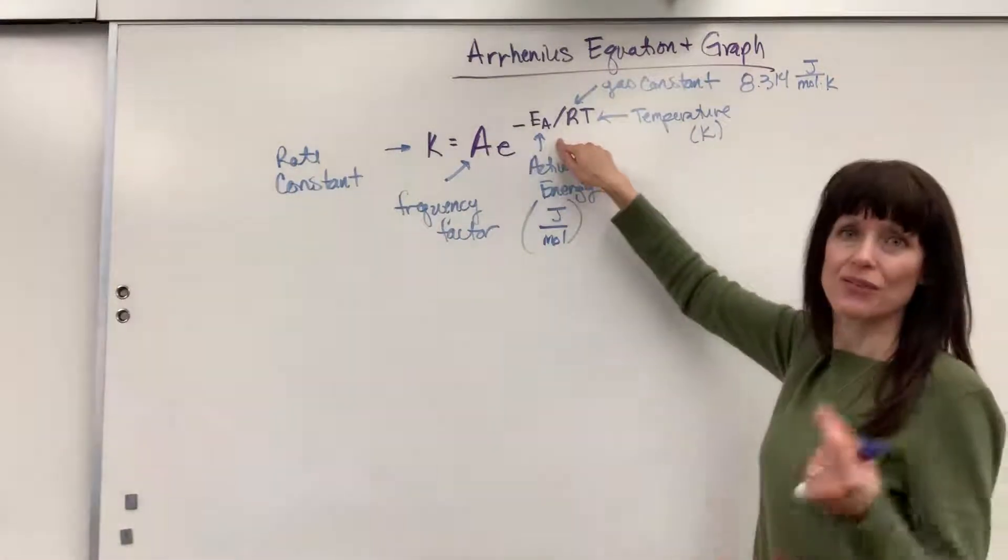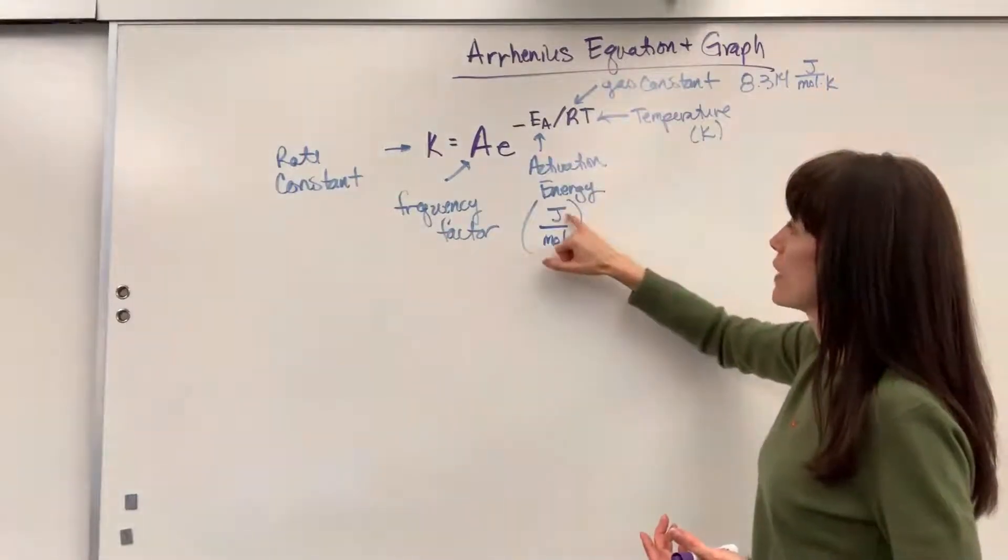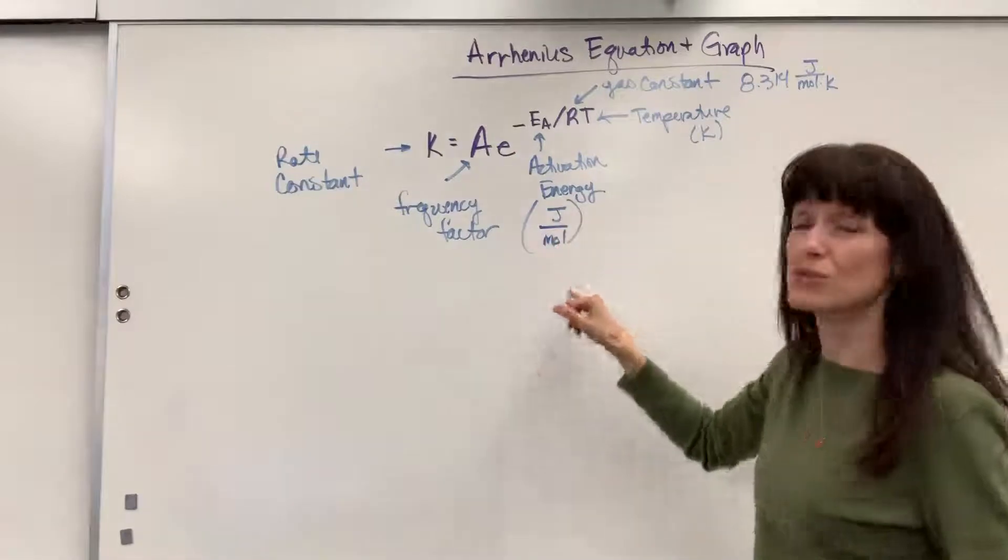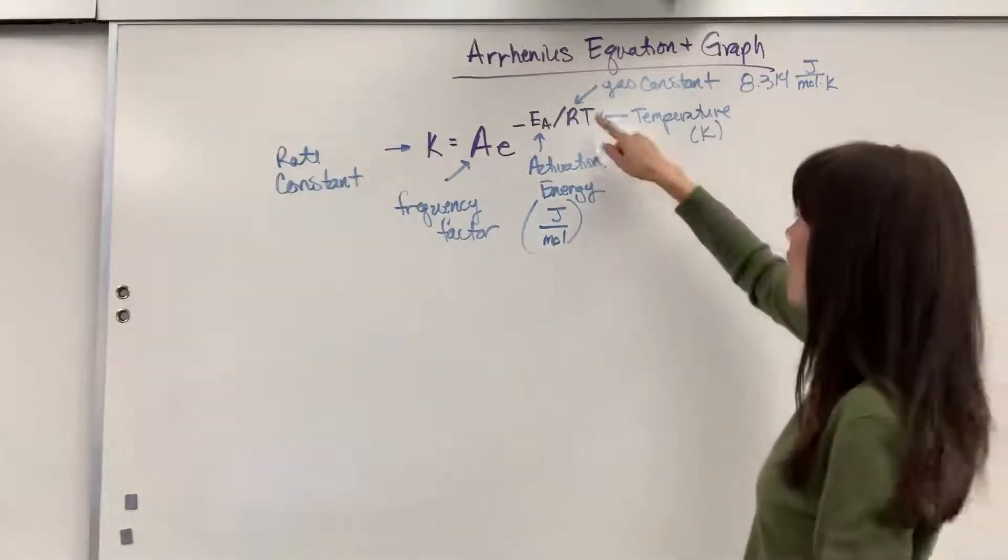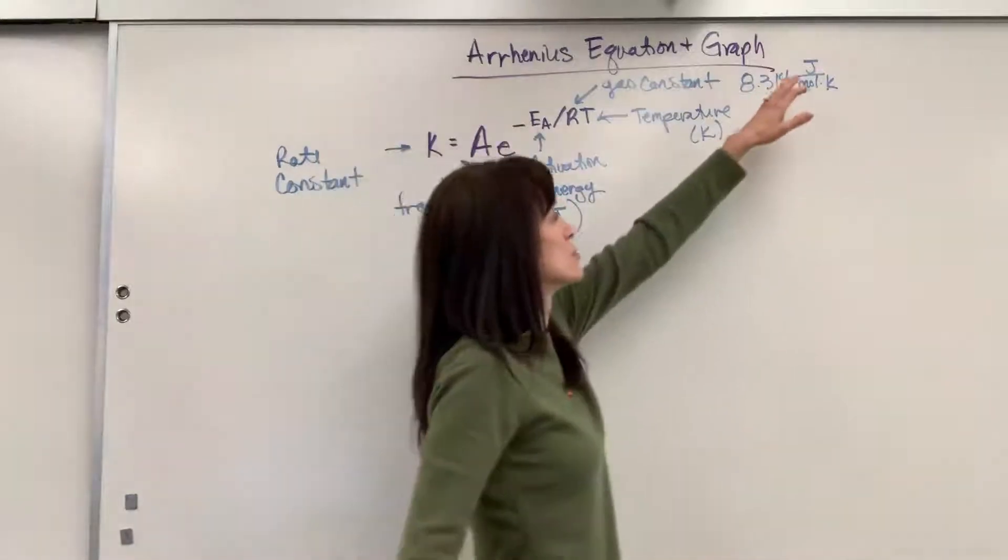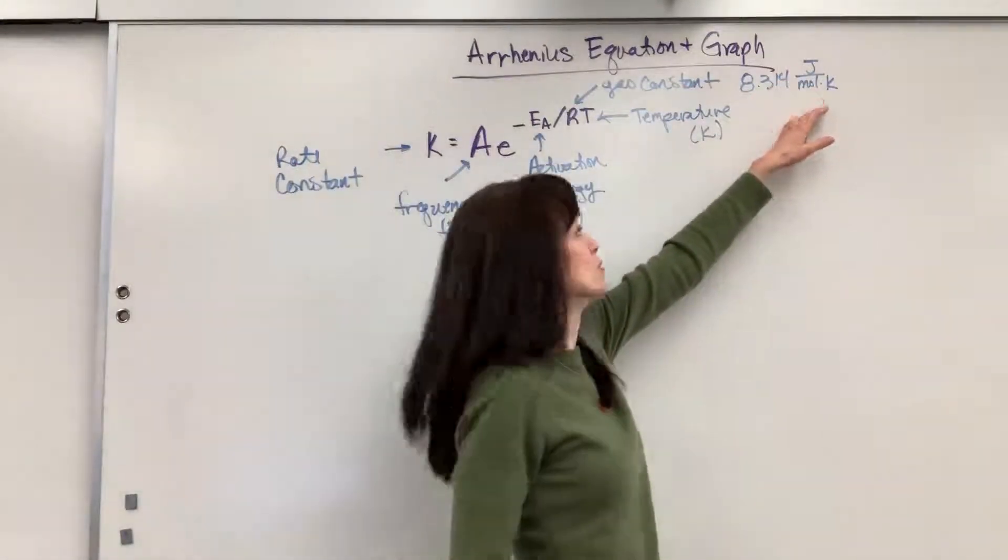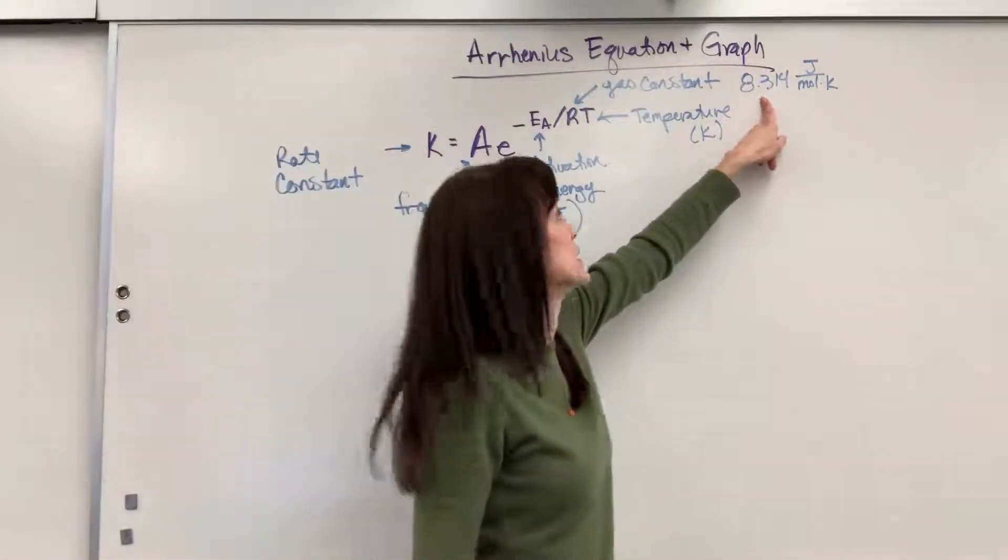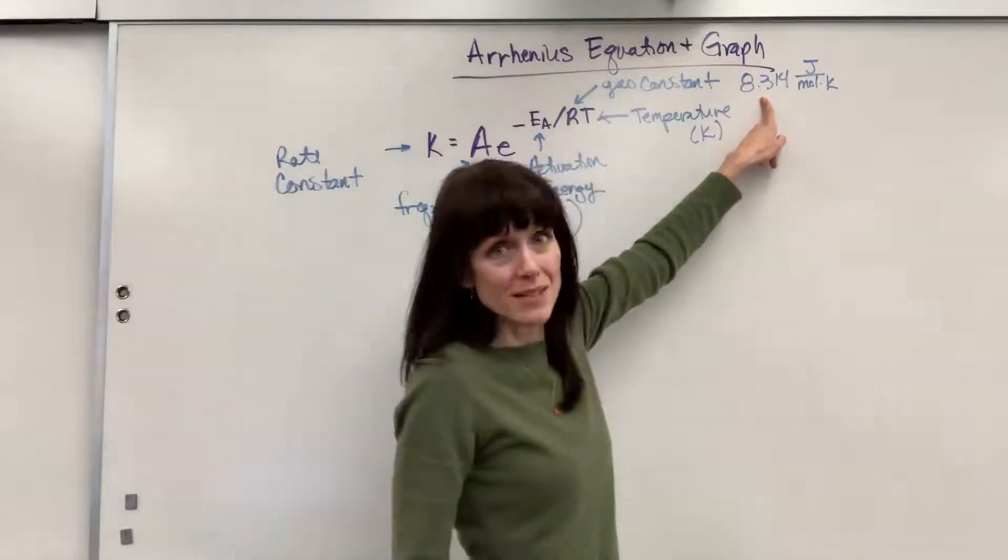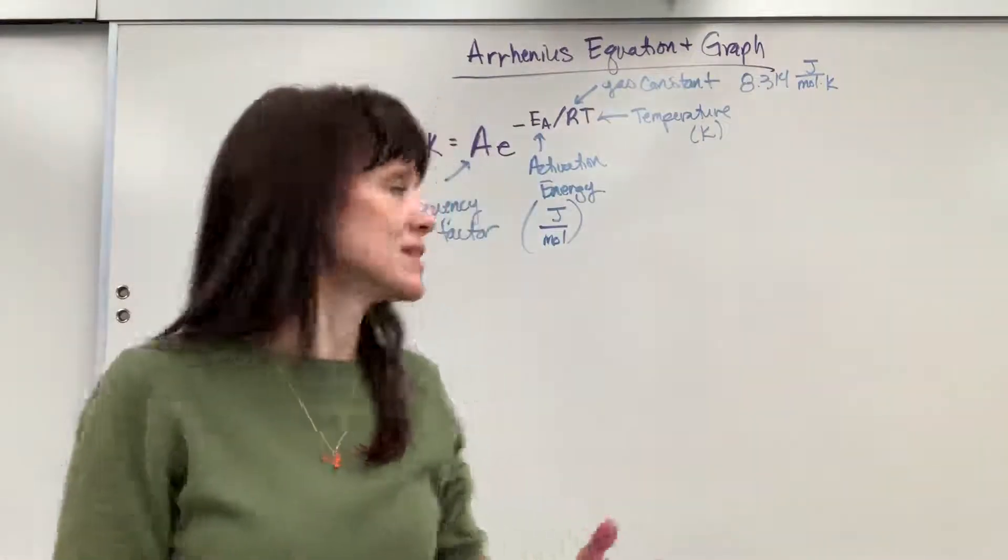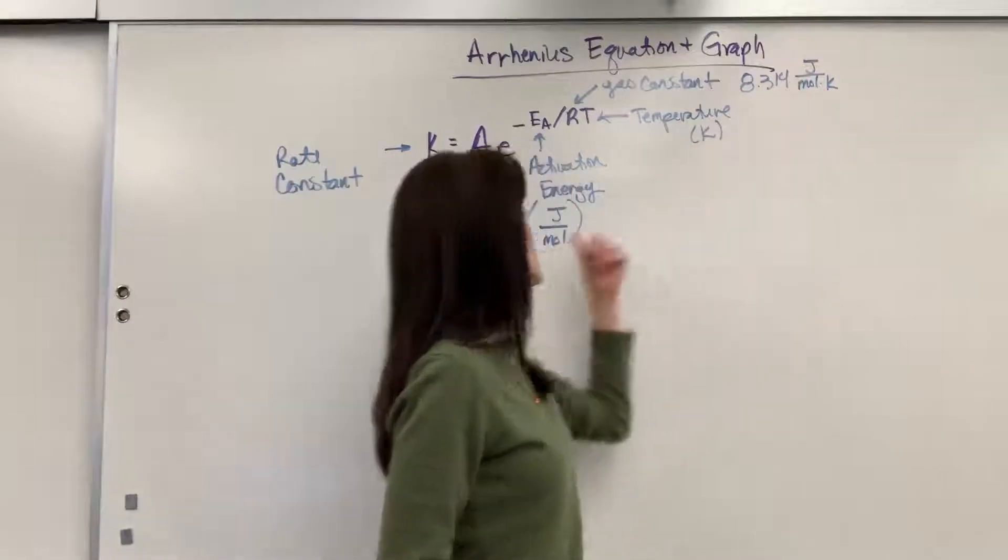The Ea, of course, is going to be your activation energy. Now, be careful on units. If you do have to do the calculation, it needs to be in joules per mole because R is the gas constant, which is 8.314 joules per mole times kelvin. So, you need to have joules and joules. If this is in kilojoules, you can change that to kilojoules. It'll just be 8.314 times 10 to the minus 3 kilojoules. Just watch your units. They need to be the same. Joule, joule, or kilojoule and kilojoule.